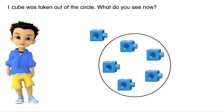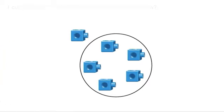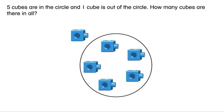What do you see now? Five cubes are in the circle and one cube is out of the circle.